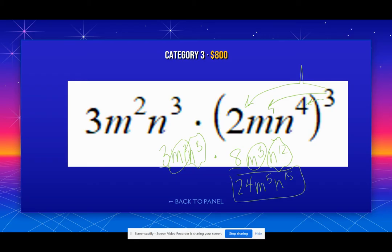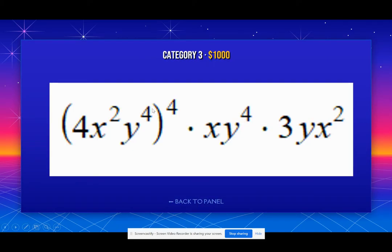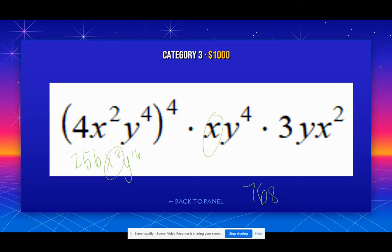When we apply our outer exponent, we multiply the exponents. When we use the product rule, we add the exponents. For the next example, we do this parentheses first. 4 to the 4th — 4 times 4 times 4 times 4 — gives 256. X to the 8th, Y to the 16th. Now combine: 256 times 3 gives 768. X to the 8th, plus X, plus X squared — that's 8 plus 1 plus 2, so X to the 11th. Then 16 and 4, plus that imaginary 1, gives Y to the 21st. Don't forget about the imaginary one on X and Y.